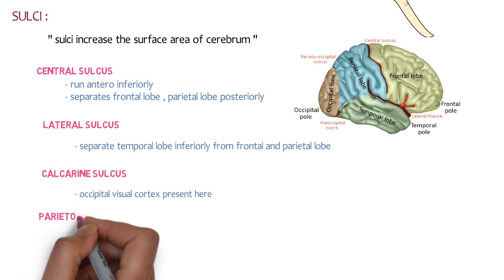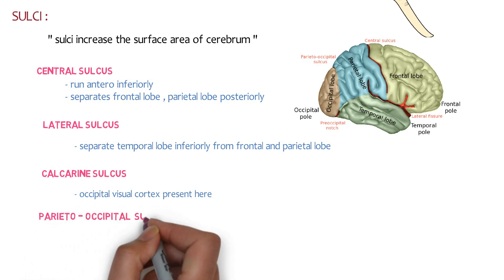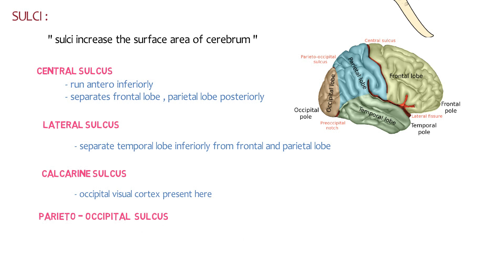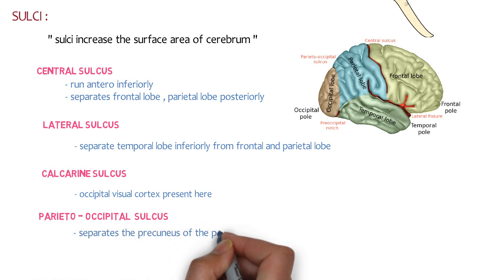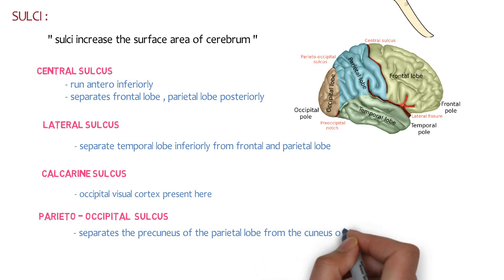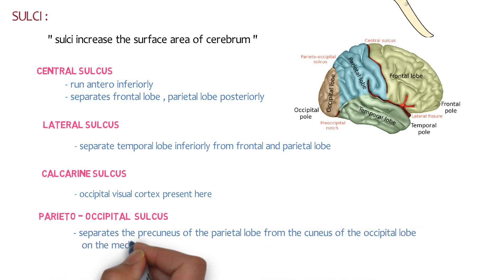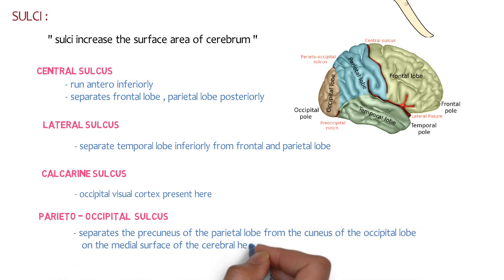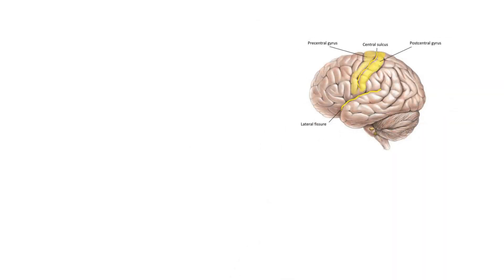The next important sulcus is the parieto-occipital sulcus. As the name suggests, it separates the precuneus of the parietal lobe from the cuneus of the occipital lobe on the medial surface of the cerebral hemisphere. So the important sulci of the cerebrum are: central sulcus, lateral sulcus, calcarine sulcus, and parieto-occipital sulcus.